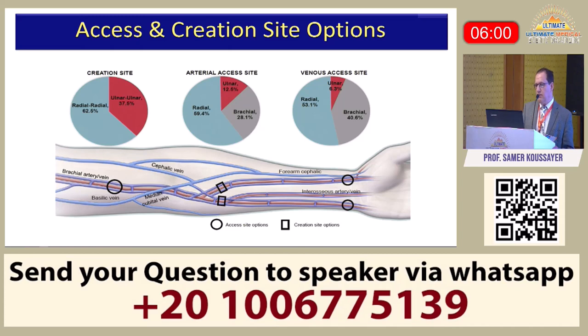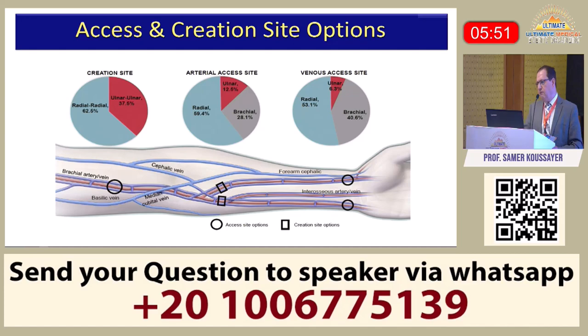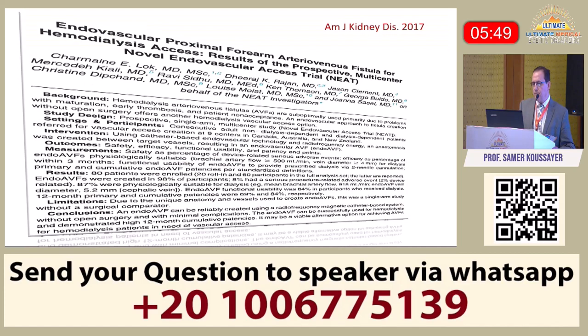Less commonly, the ulnar artery and ulnar vein are used. For arterial access, the radial artery is most common but you can go through the brachial or ulnar artery. Venous access is usually through the radial vein, but you can also use the brachial vein or ulnar vein.